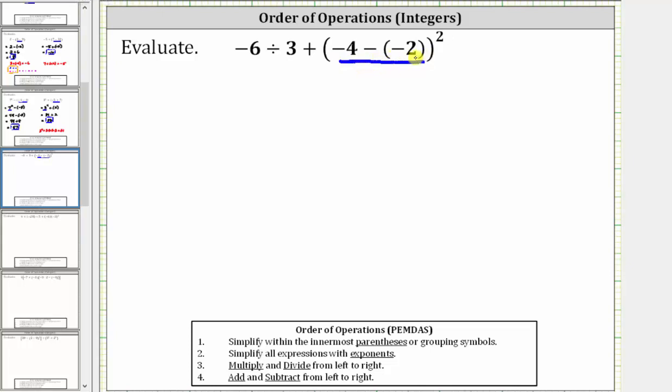Subtracting a negative is equivalent to adding a positive, which means negative four minus negative two is equivalent to negative four plus positive two, and negative four plus positive two is equal to negative two. Notice how the result is negative because the negative four is outweighing the positive two.